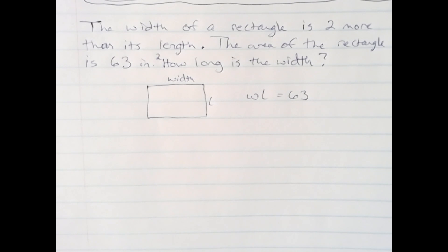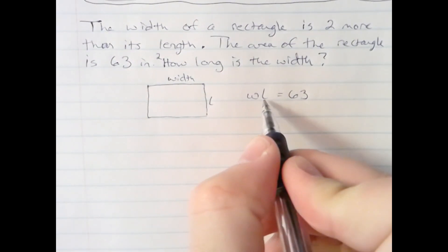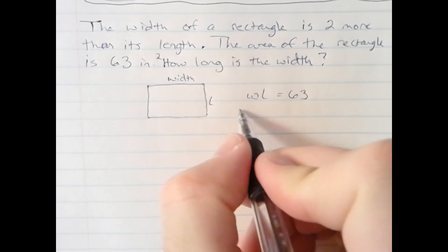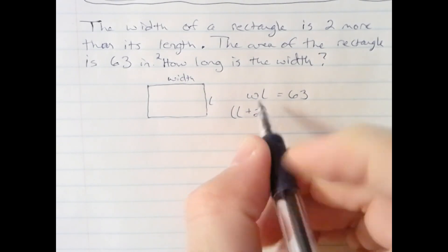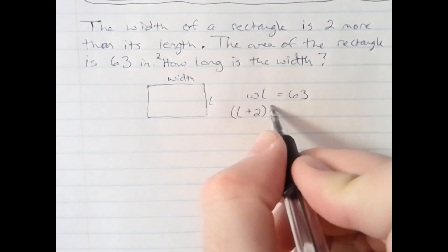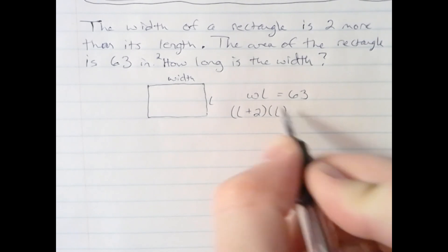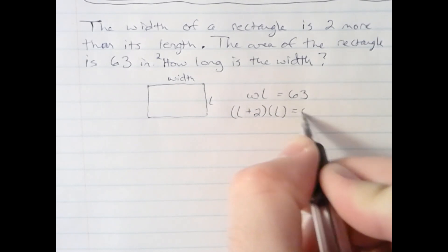Now, right now we just have two variables, a W and an L. We've got to go back to the first sentence in the problem to eliminate one of those variables in terms of the other. It says the width of the rectangle is two more than its length. So if we just keep L, we could say W is L plus 2. That quantity L plus 2 is representing W. We are still multiplying by L for the original length, and it still equals 63.